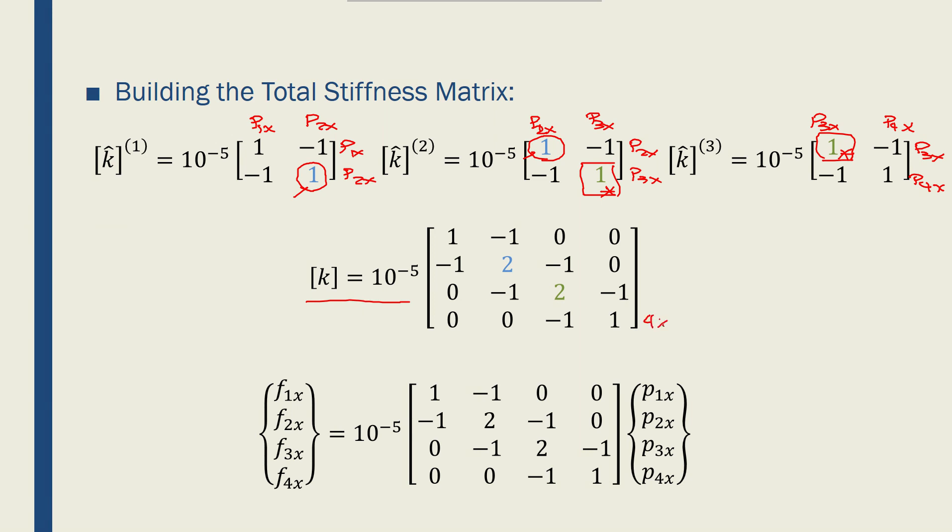This is a 4 by 4 because I have 4 nodes and 1 degree of freedom. This is p1x, p2x, p3x, p4x for the rows and columns. And that's why these two are coming from here and here.